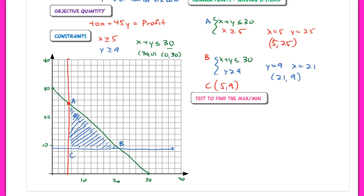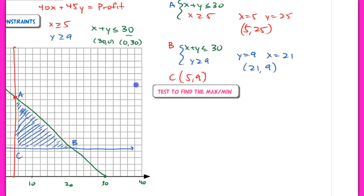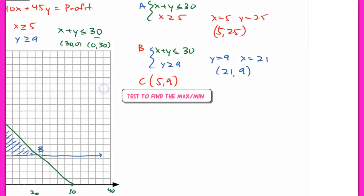All right, now that we have our corner points, we are going to test these corner points to find our actual max or min. And now when you test these, you're testing them in the objective quantity. So test this in the objective quantity. And in this case, we're trying to maximize our profit. So we're looking at 40X plus 45Y, which is our profit here. And we're just going to plug in our coordinates, 5, 25 into here, the point 21, 9 and 5, 9 to see which one of these produces our max profit.